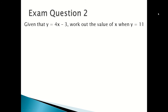Now we're going to look at the second exam question. Given that y is equal to 4x minus 3, work out the value of x when y is equal to 11. This is the type of question where you have to rearrange the formula to get the value of a letter. Here we need x, and we already know what y is, so first you input the given values: 11 equals 4x minus 3.